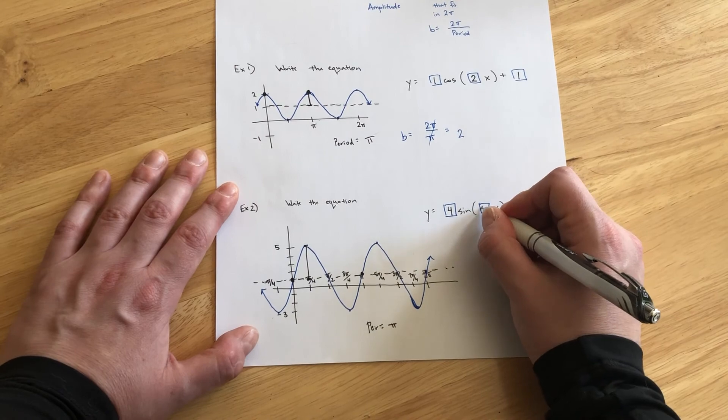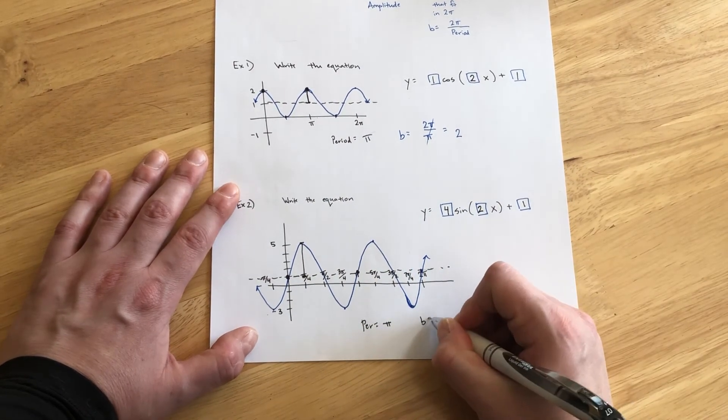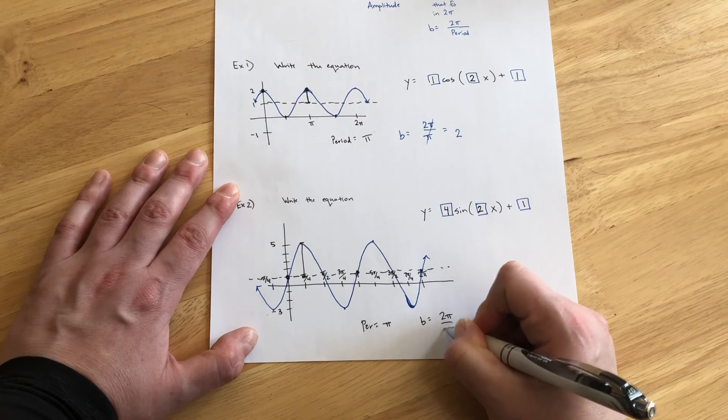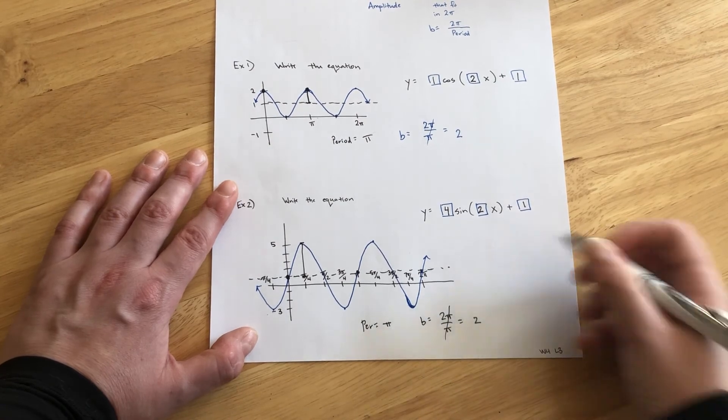So, once again, the B parameter is 2. Or, if we take 2π divided by the period π, we see that it is definitely 2.